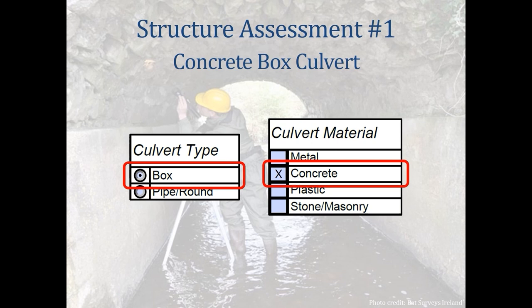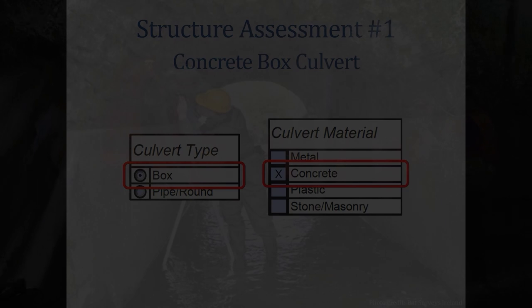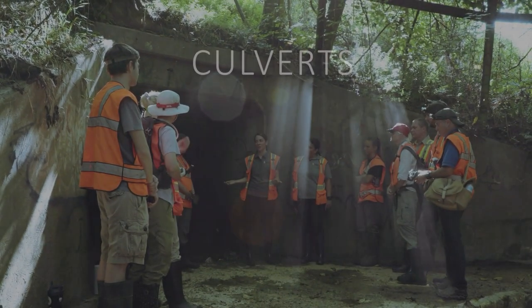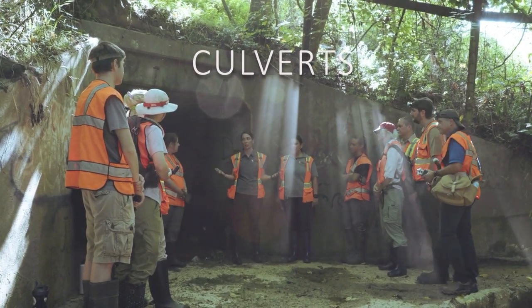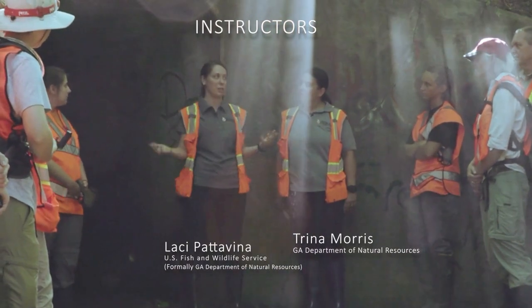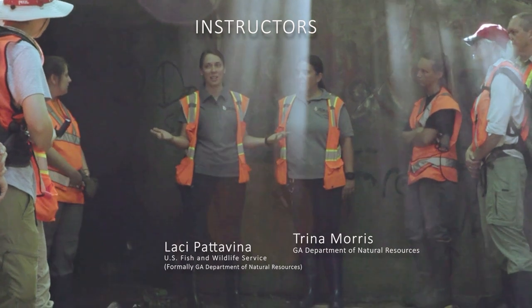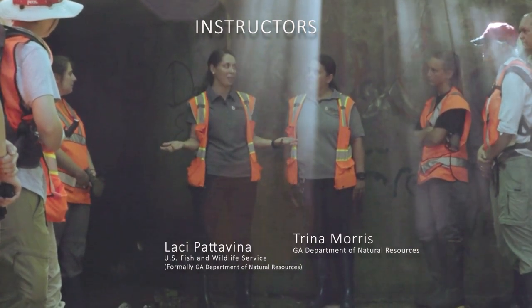Structure Assessment Number 1 is a concrete box culvert over 1,000 feet long. This culvert carries a stream under eight lanes of interstate as well as on and off ramps. The culvert begins as a single concrete box culvert but transitions to a Y-shaped culvert midway through, with one side continuing as a single box and the other continuing as a concrete pipe culvert. This is a culvert that at some times of year has bats using it, so we have to think about what we would be looking for to determine whether or not bats are present.